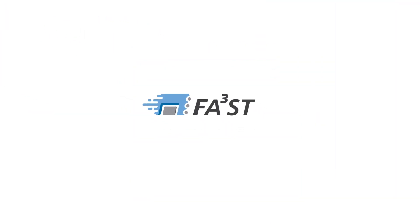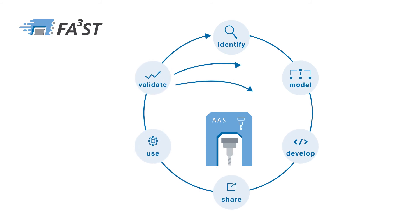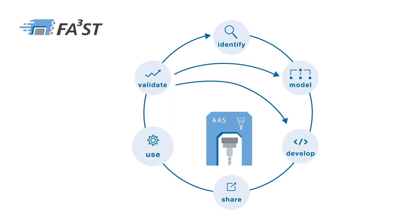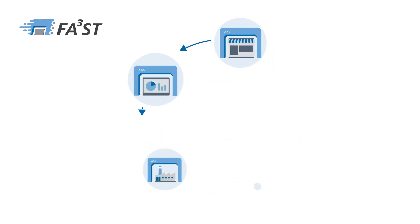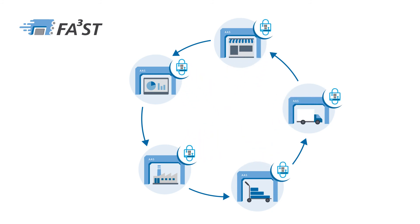FAST comes with a toolset for the entire digital twin lifecycle, from identification to modeling, development, sharing, use and validation. FAST also offers solutions for cross-company use cases. This is achieved by adding data sovereignty aspects to the digital twin of each supply chain partner.